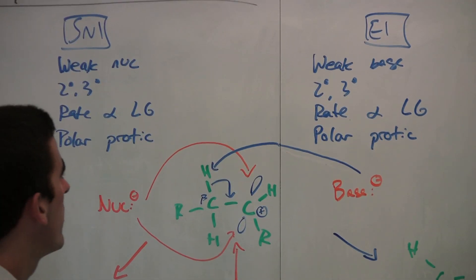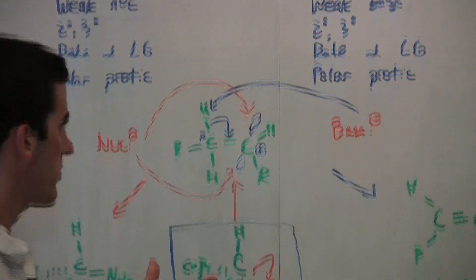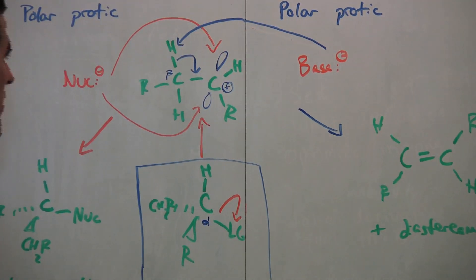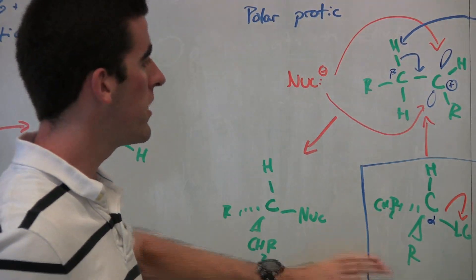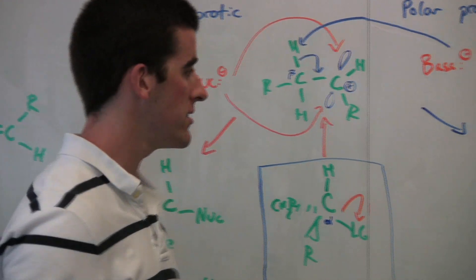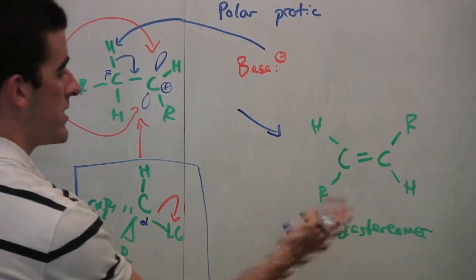Next, going on to E1, we notice that since the leaving group left, now the base can come in and, again, take off those beta hydrogens. So once it does that, the double bond is formed. Again, like in E2, the double bond is always formed in elimination reactions. And you form this product with its diastereomer.